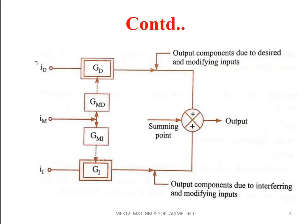In this figure, Id, Im, and Ia correspond to the input quantities of the desired, modifying, and interfering inputs respectively. The final part shown is the output of the system. Id corresponds to the desired inputs — when designing a particular system, we look after the desired output, and in that context we provide the input quantities.